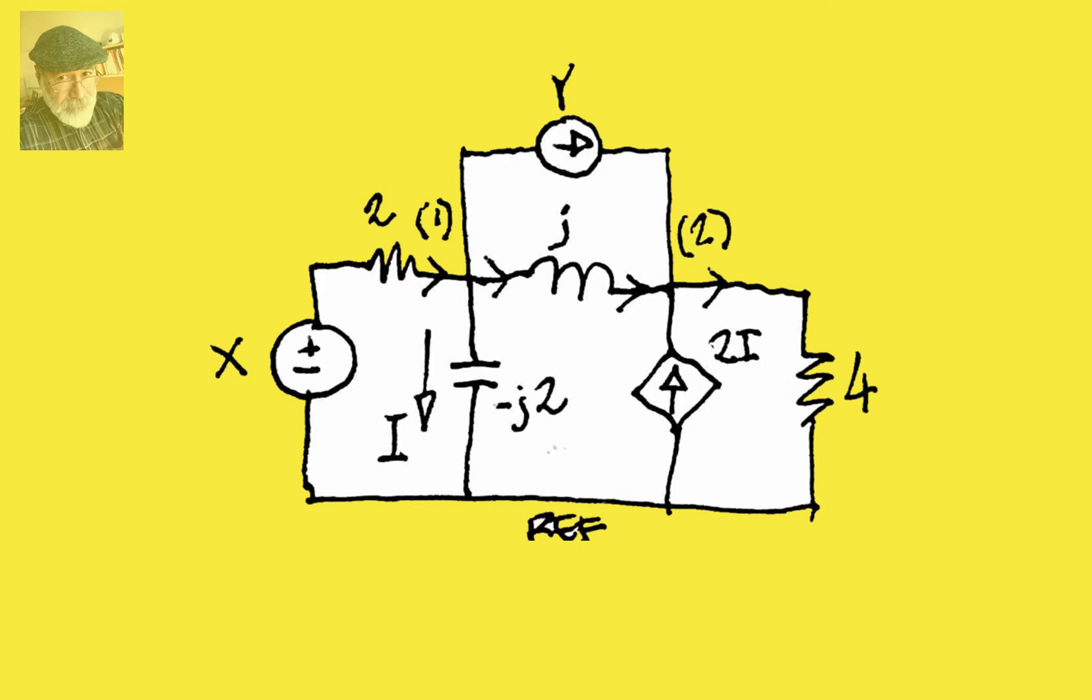We need to solve this circuit here. In that circuit, we observe there is a controlled source, this one 2i, so immediately we realize we need to write a CTL equation for the corresponding controlling variable i, this one over here.